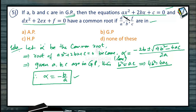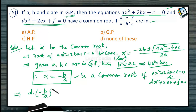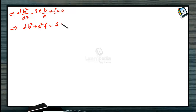Since -B/A is the common root, it must satisfy the second equation DX² + 2EX + F = 0. Substituting alpha = -B/A gives: D(-B/A)² + 2E(-B/A) + F = 0, which becomes DB²/A² - 2EB/A + F = 0. Taking LCM gives DB² + A²F = 2ABE.